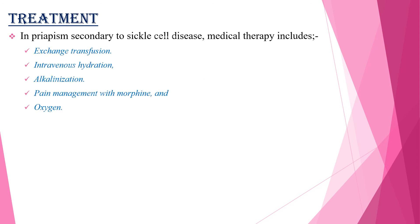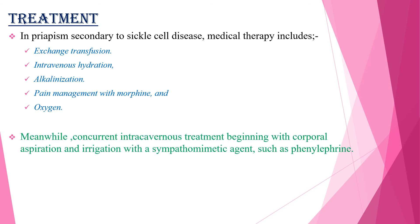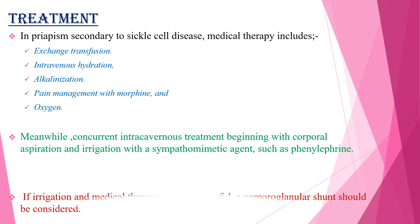Regarding treatment of Priapism secondary to sickle cell disease, medical therapy includes exchange transfusion, IV hydration, alkalinization of the blood, pain management with morphine, and oxygen administration. Concurrently, intra-cavernous treatment beginning with corporal aspiration and irrigation with sympathomimetic agents such as phenylephrine is recommended. If irrigation and medical therapy are unsuccessful, a corporoglandular shunt should be considered.